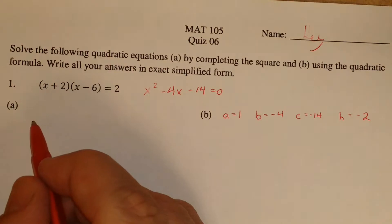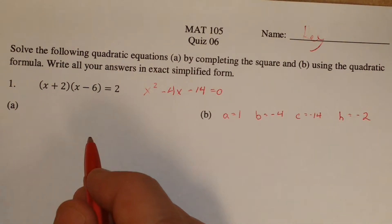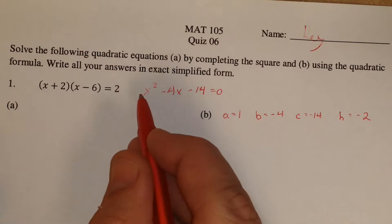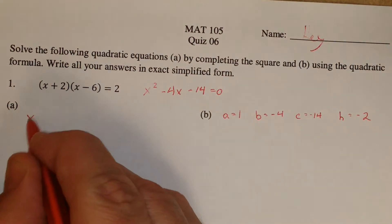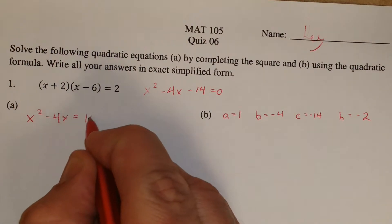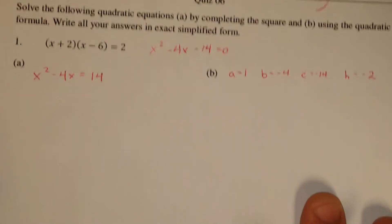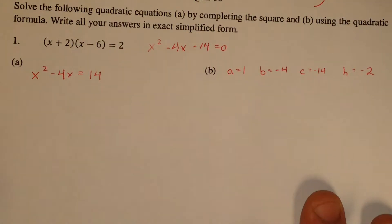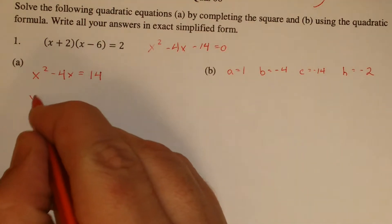So what we do with completing the square is we take the thing that's in standard form, we add c and divide by a. So since a is 1, we don't have to divide by a, but subtracting c off, we get this. Then what we do is we add h squared to both sides. So since h is negative 2, h squared is 4, so I'm going to add that to both sides.